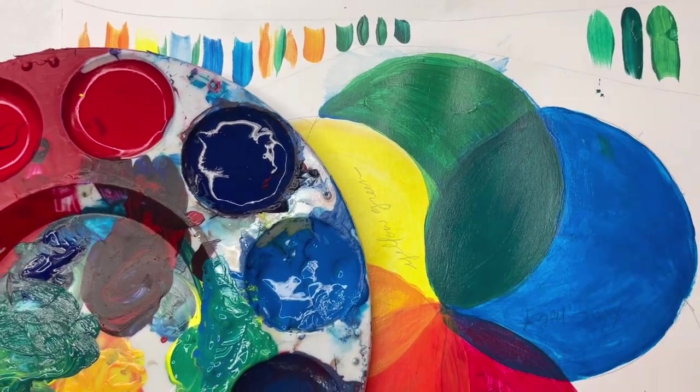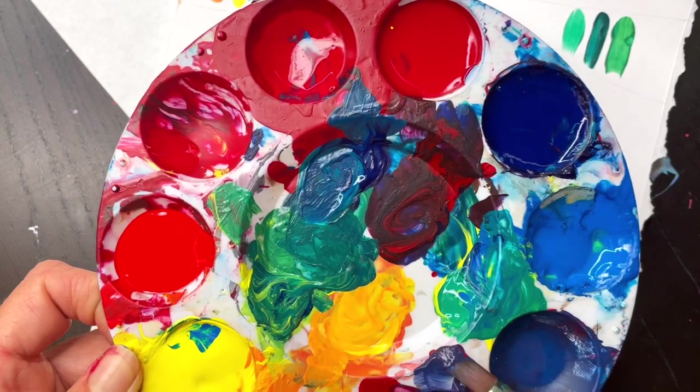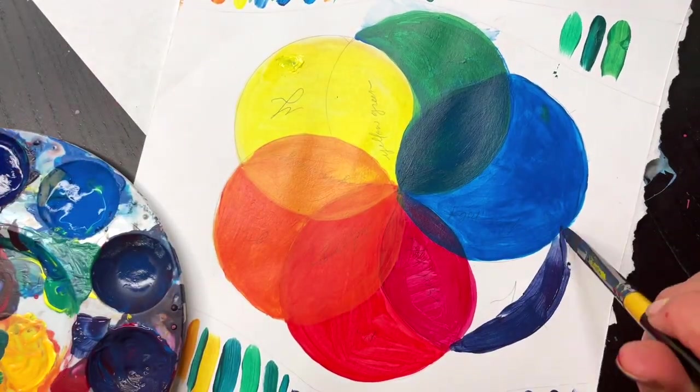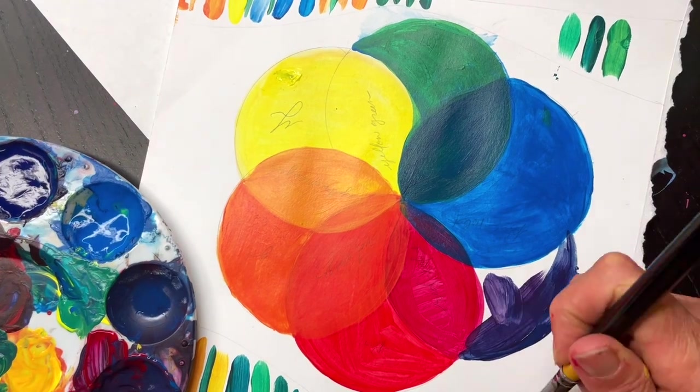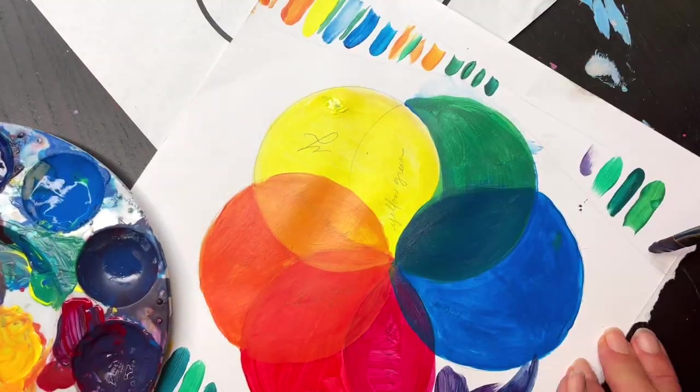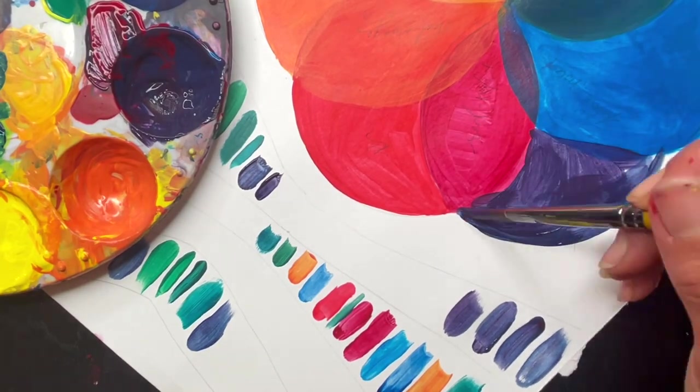You'll notice that I am working each primary at a time. Right now I'm working my blues. I'm going to go ahead and come back with my ultramarine blue, which I know is the best blue to mix a nice true violet. I also know that my primary red that is more pink in tone is going to mix my best violet. Let's go for it.